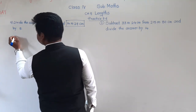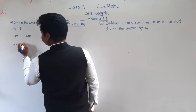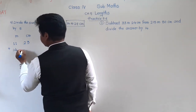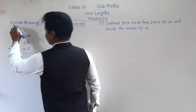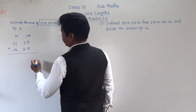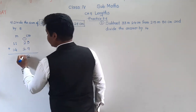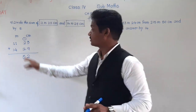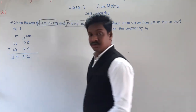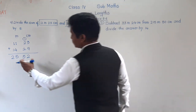Since the lengths are given in meters and centimeters, let us make two columns: meter and centimeter. First: 11 meter 23 centimeter, plus 14 meter 29 centimeter. Now we add: 3 plus 9 is 12, so 2 comes down and 1 is carried. 2 plus 2 is 4, plus 1 carried is 5. Then 1 plus 4 is 5, and 1 plus 1 is 2. This is the sum of the two lengths.